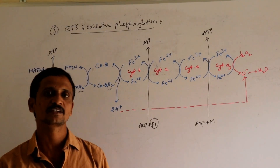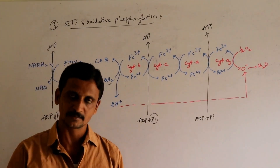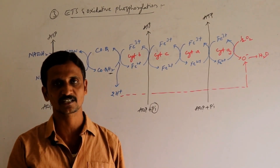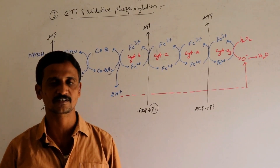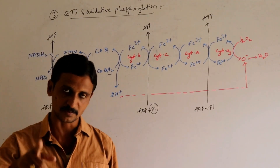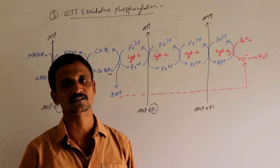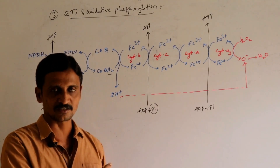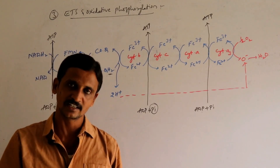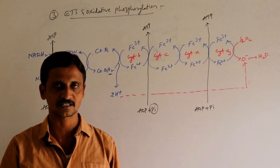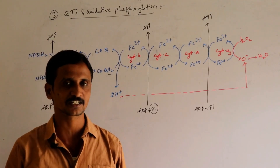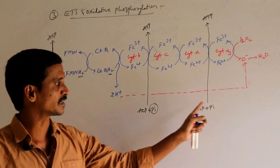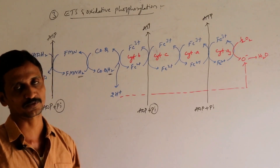In photosynthesis, ATP is formed in the presence of sunlight — ADP plus inorganic phosphate in the presence of sunlight leads to ATP, which is why it is called photophosphorylation. In cellular respiration, ADP combines with inorganic phosphate in the presence of oxygen to form ATP — that is why it is called oxidative phosphorylation.